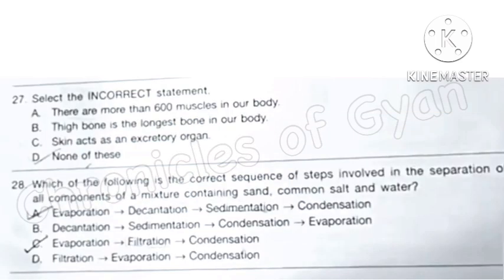Question 27: Select the incorrect statement. Statement A: There are more than 600 muscles in our body. This is correct statement. Statement B: Thigh bone is the longest bone in our body. The femur bone that is located in the thigh is the longest bone in our body. And this is correct statement. Statement C: Skin acts as an excretory organ. Yes, this is correct statement. So the correct answer is option D: None of these statements is incorrect.